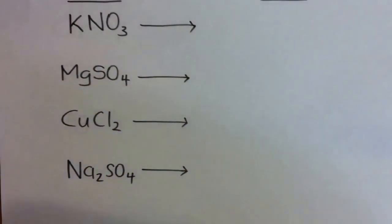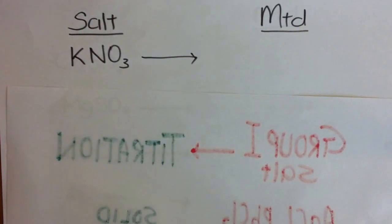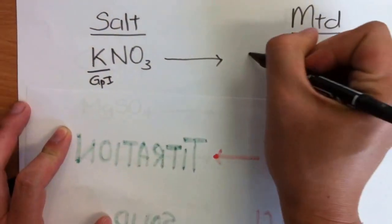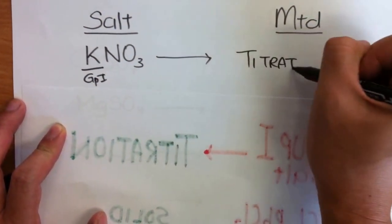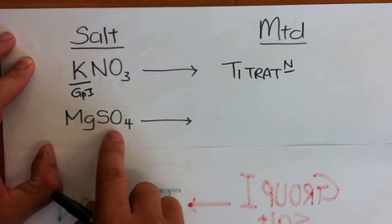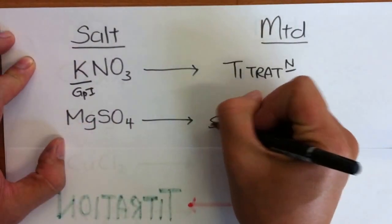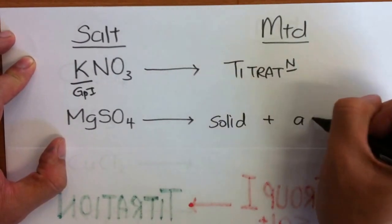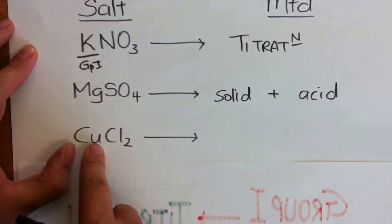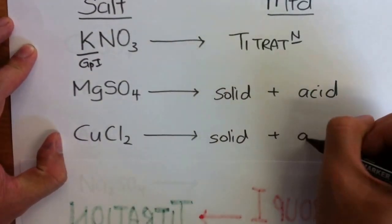Let's start with the first one. Using the 3 methods, if I give you a salt, which method would you choose? Potassium nitrate — potassium is group 1, so I will use the method known as titration because it's a group 1 salt. Magnesium sulfate is not group 1 and is none of the 5, so I will use the method solid plus acid. Copper chloride is not group 1 and not one of the 5, so I will use solid plus acid.